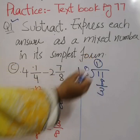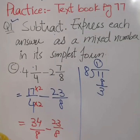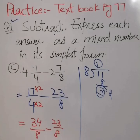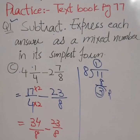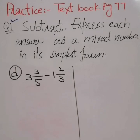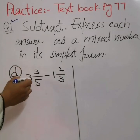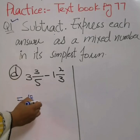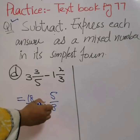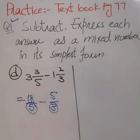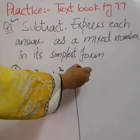The quotient becomes the whole number, the remainder becomes the numerator, and the denominator remains the same. So we get 1 whole 3 over 8. Now we have part d: 3 whole 3 over 5 minus 1 whole 2 over 3. We convert these mixed numbers into improper fractions: 18 over 5 minus 5 over 3. We have two different denominators, 5 and 3, so we take their multiples.